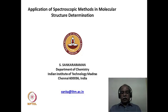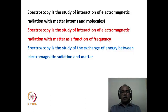Spectroscopy in the broadest term is defined as the study of interaction of electromagnetic radiation with matter, and when we talk about matter, we are dealing with atoms and molecules. Essentially the interaction of atoms and molecules with electromagnetic radiation is what constitutes spectroscopy. Spectroscopy is the study of interaction of electromagnetic radiation with matter as a function of frequency, because whenever we record a spectrum, we are scanning various frequencies and recording the response of the material for the various frequencies of the electromagnetic radiation.